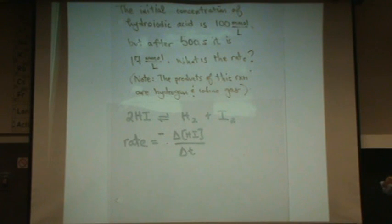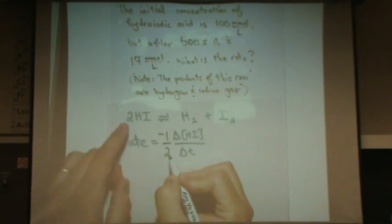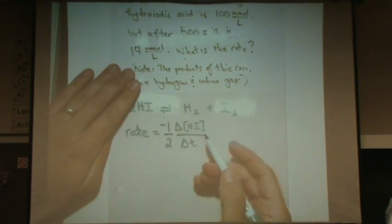And then we're going to have to do 1 over the coefficient, or 1 over 2, because there's a 2 right there. If we're finding the rate of the production of H2 or I2, it would just be 1 over 1. Alright, so now let's plug in.